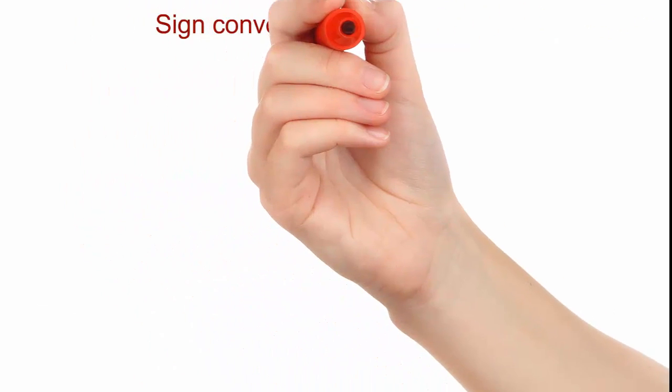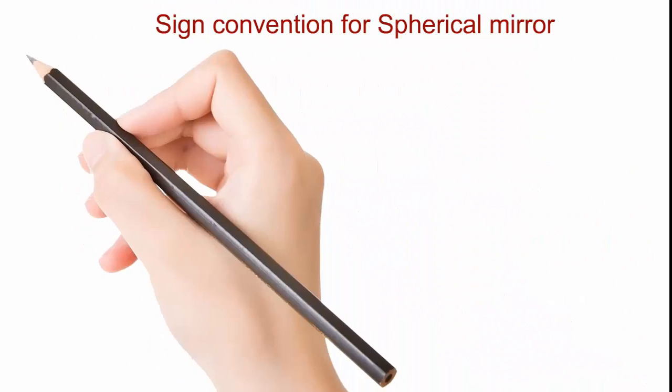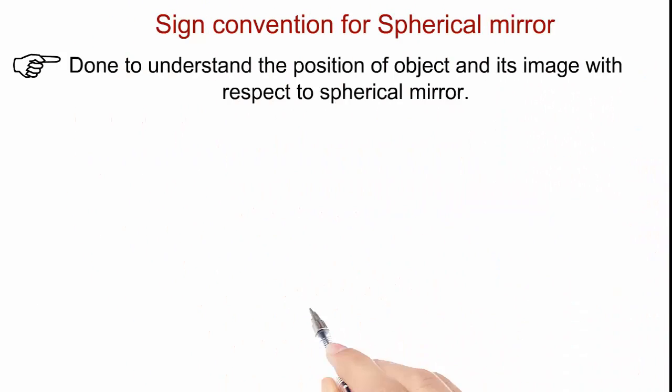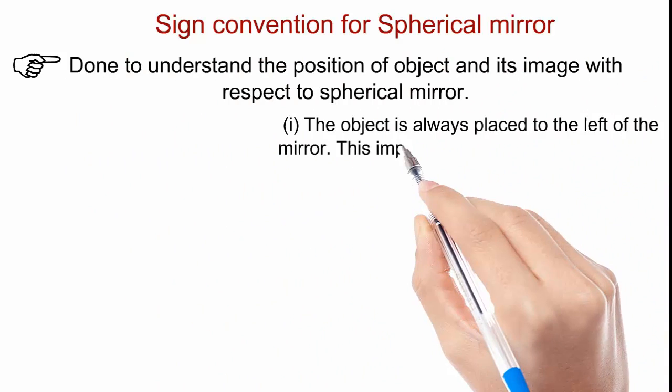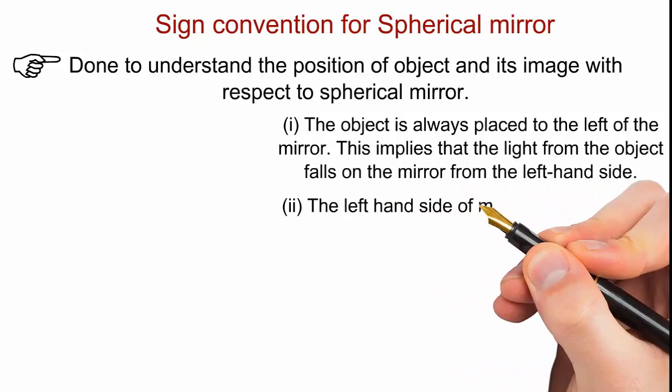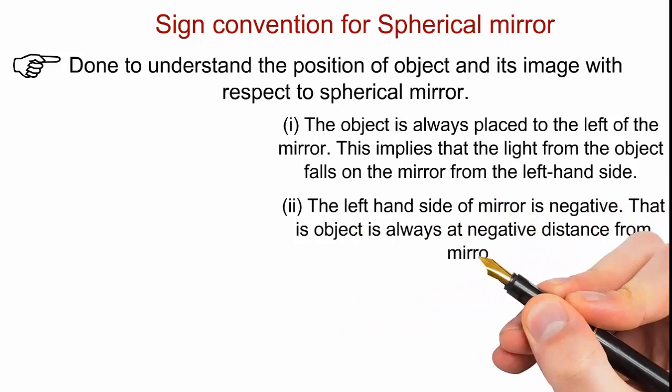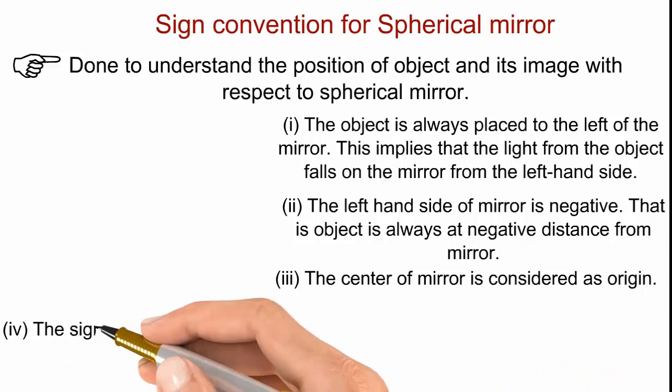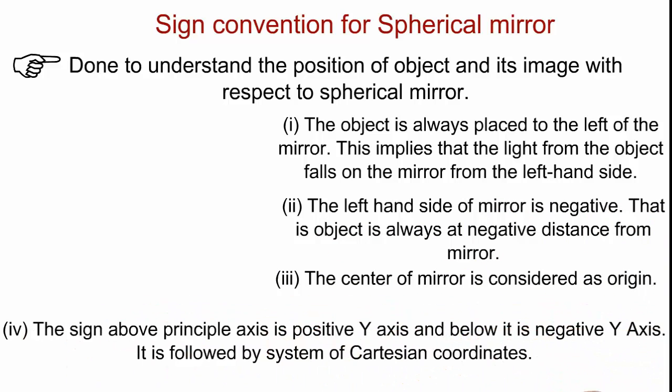Now sign conventions for spherical mirrors. This has been done to understand the position of object and its image with respect to given spherical mirror. The object is always placed to the left of the mirror. This implies that light from the object falls on the mirror from left hand side. The left hand side of mirror is negative. That is, object is always at negative distance from mirror.